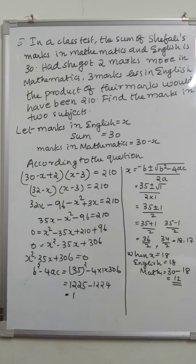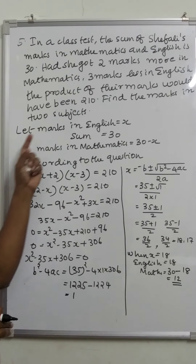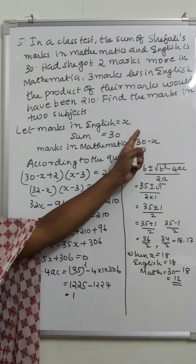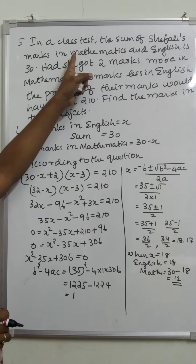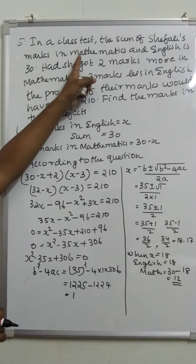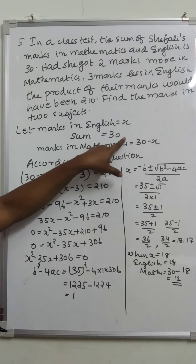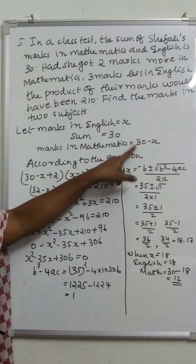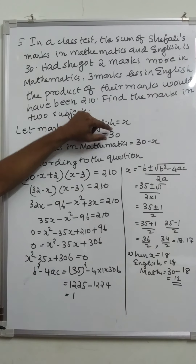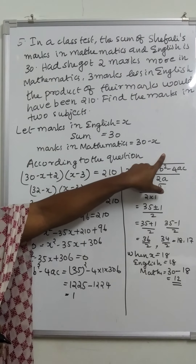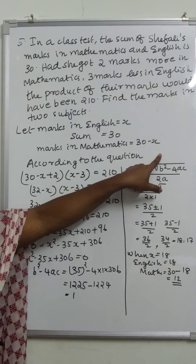Find the marks in two subjects. Let us assume that marks in English is equal to x. Given that the sum of marks in mathematics and English is 30, and marks in English is x, therefore marks in mathematics is equal to 30 minus x.